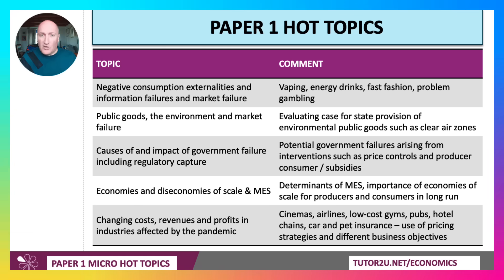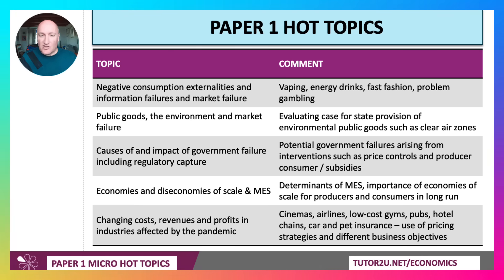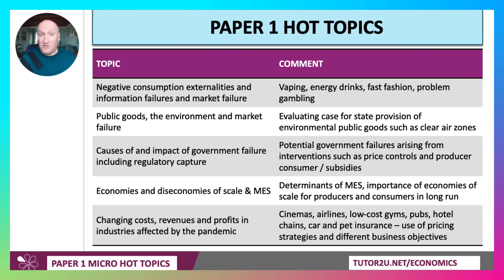You can't go wrong in Paper 1 if you have a good understanding of government failure, one of the main causes including regulatory capture. So potential government failures from interventions in markets such as price controls — maximum and minimum prices — and the impact of subsidies both to producers and consumers.